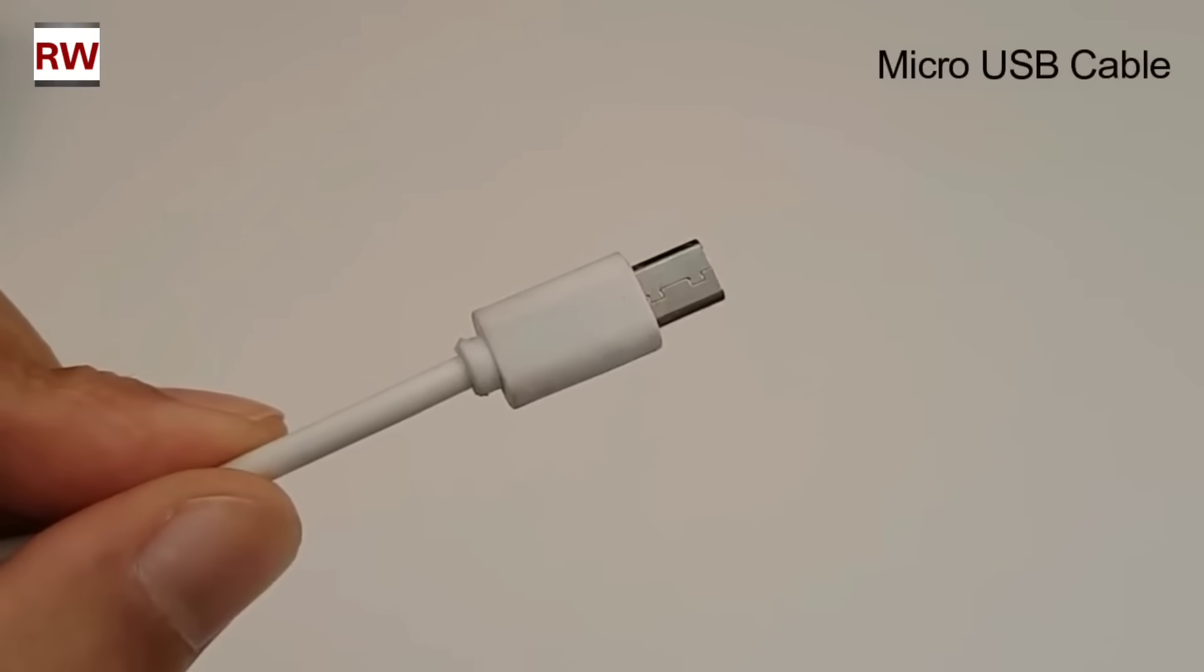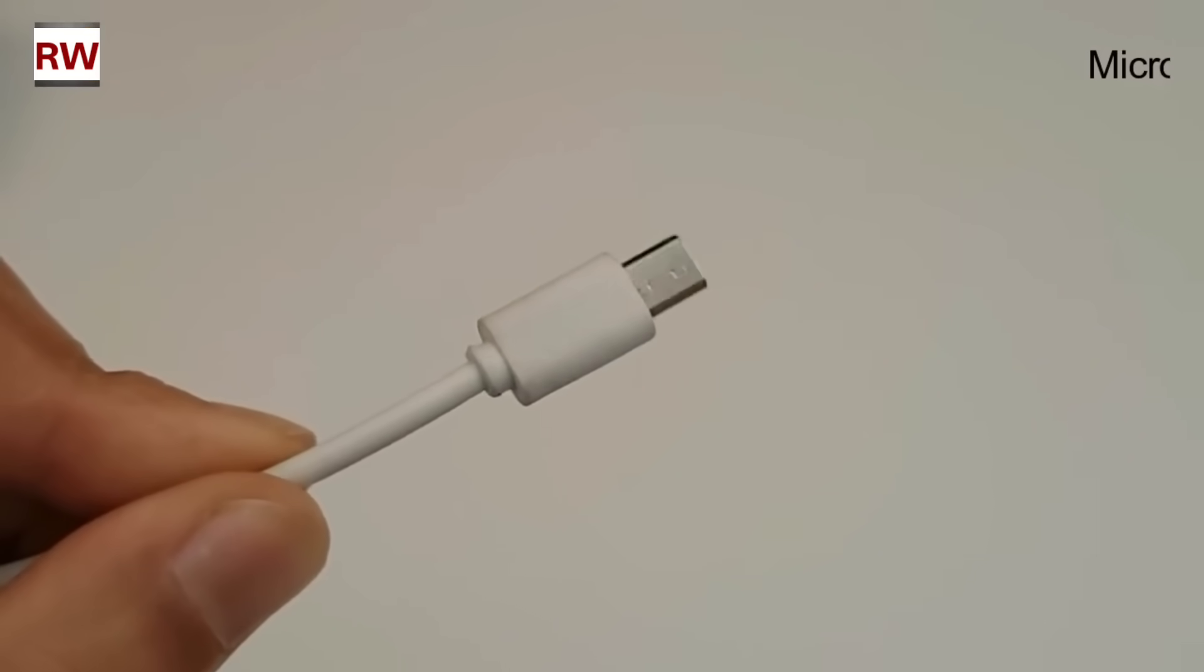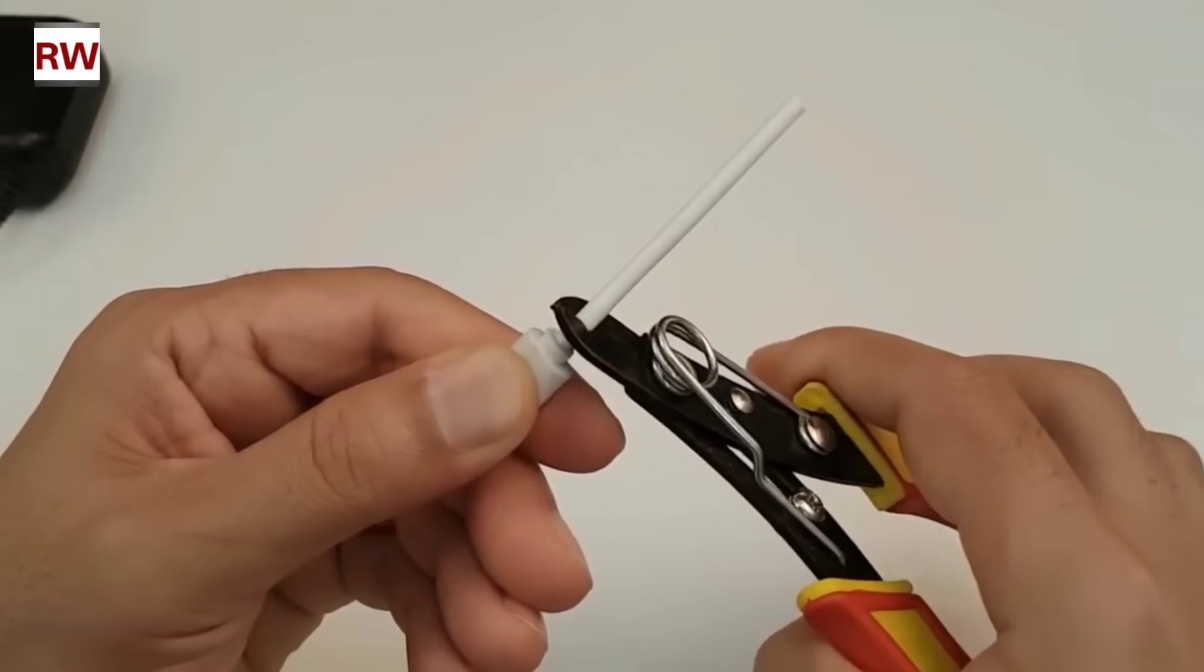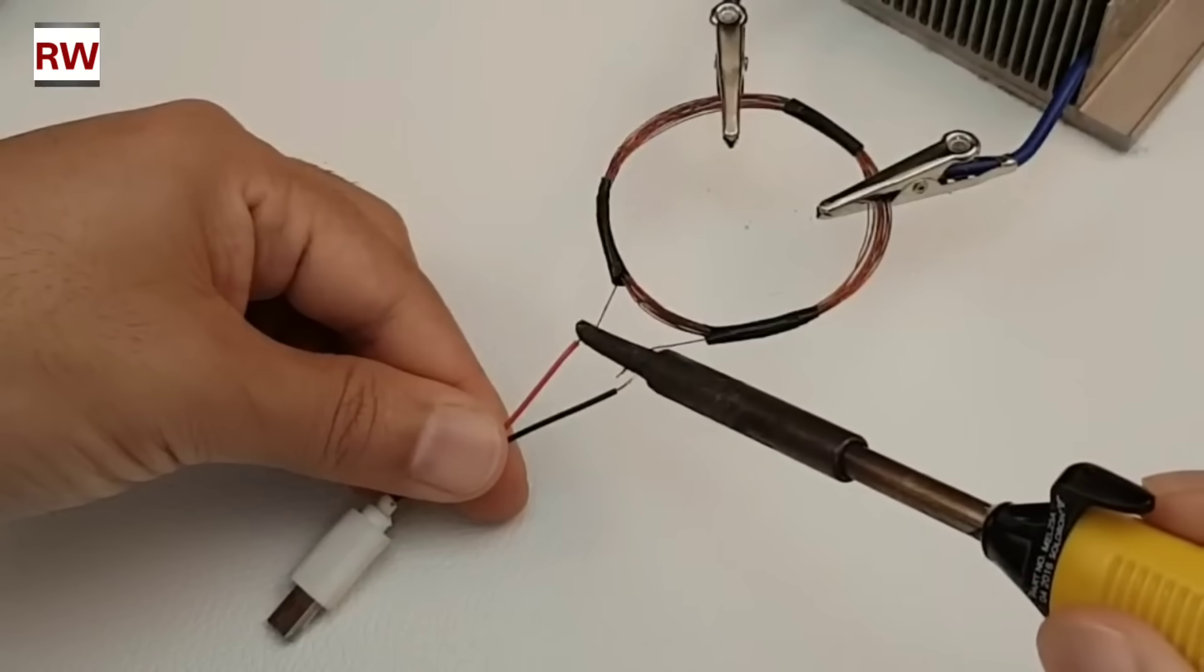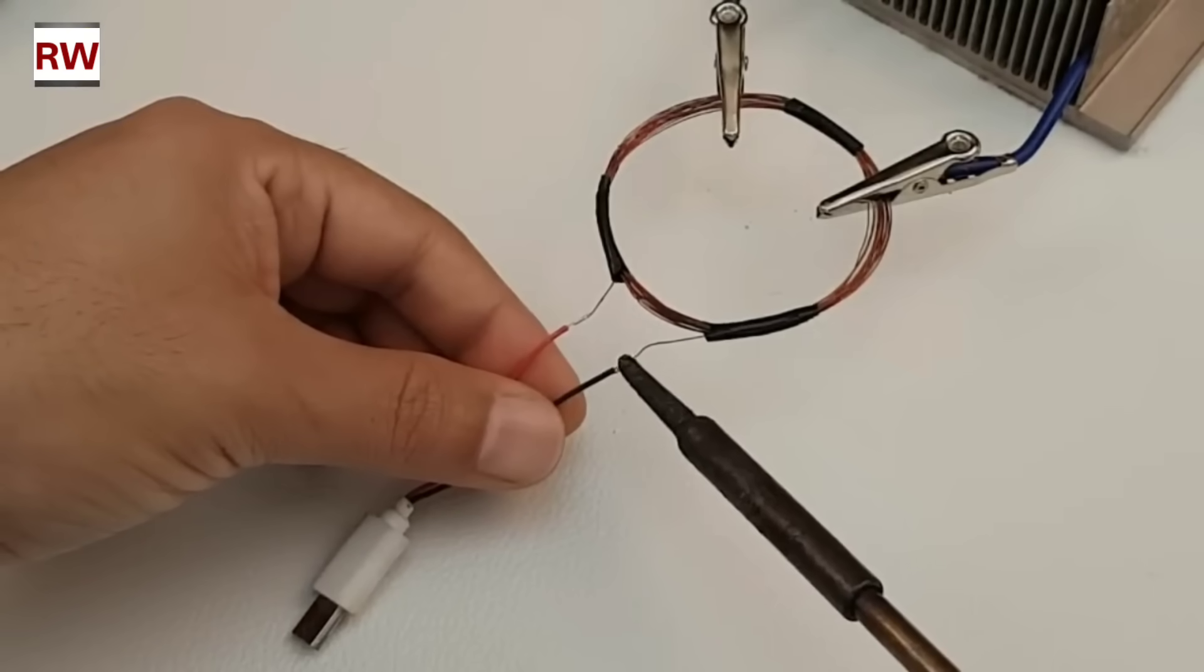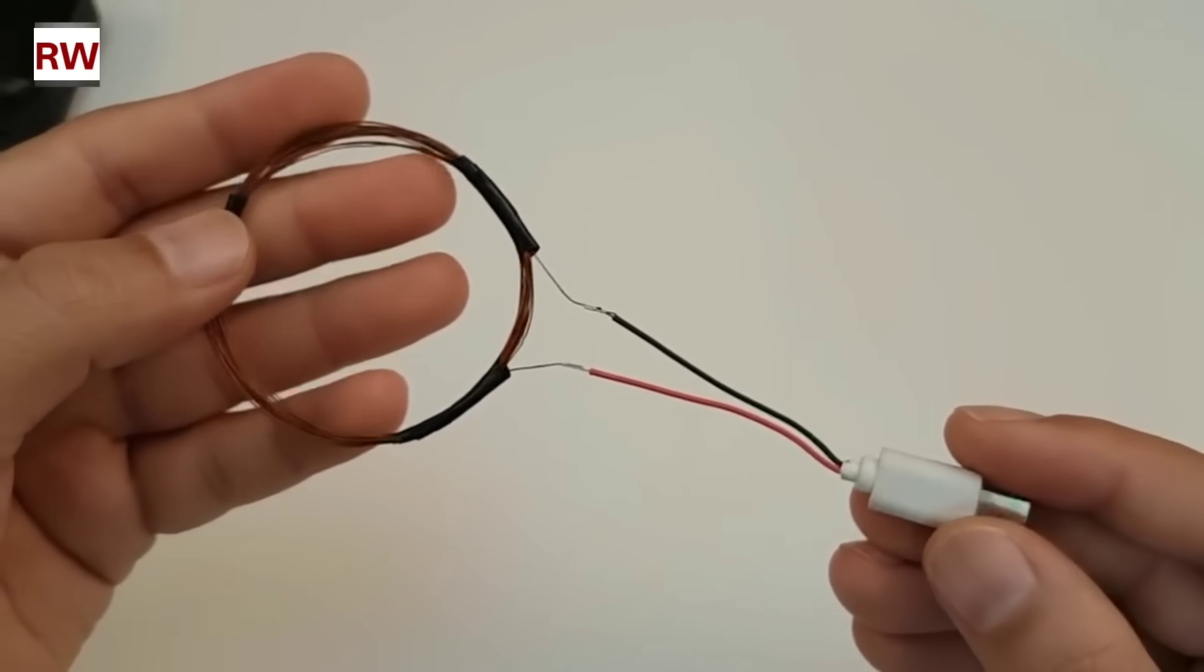After this step, we need to bring in a micro USB cable. Using a cutter, trim the cable according to the required length. Once you've cut it properly, the next task is to connect it to the copper coil. Use a soldering iron to carefully join the wires together.